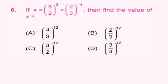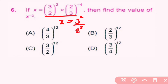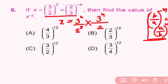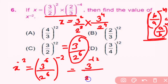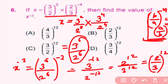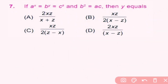Question number 6: if x equals (3/2) squared into (2/3) raised to minus 4, find x raised to minus 2. Here x equals 3 squared over 2 squared into 3 raised to 4 over 2 raised to 4. Bases are same so we add powers: 3 raised to (2 plus 4) equals 3 raised to 6 over 2 raised to 6. For x raised to minus 2: (3 raised to 6 over 2 raised to 6) whole power minus 2 gives 3 raised to minus 12 over 2 raised to minus 12. Option B is correct.